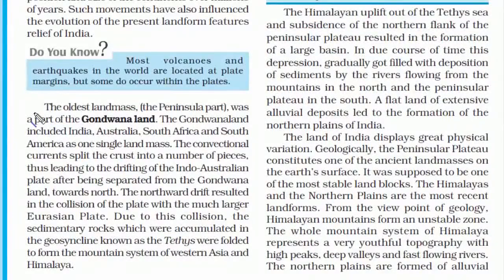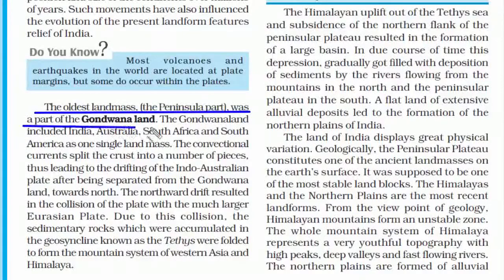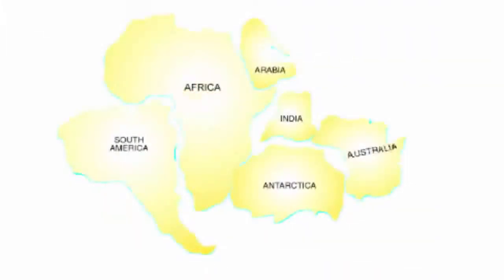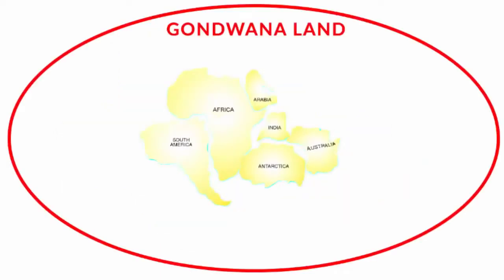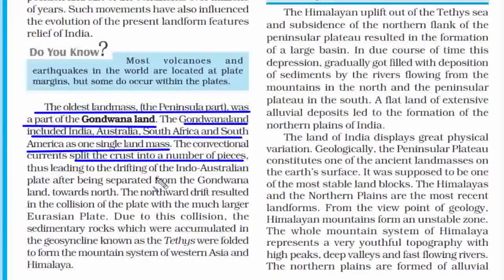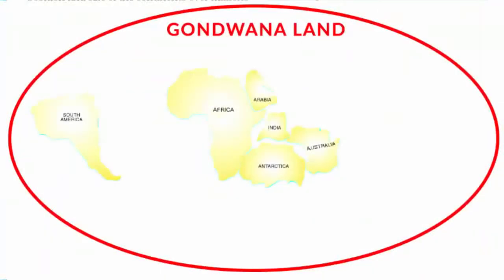India displays great physical variation. The peninsular plateau is one of the ancient landmasses on the earth's surface — it was a direct piece of Gondwana land. The peninsular region of India is the oldest landmass, and was part of the Gondwana land, which comprised several countries like South America, Africa, India, Antarctica, and Australia, all forming one single landmass. The crust then broke into a number of pieces and everything started drifting apart, with South America moving left, Antarctica going south, and India and Australia moving north and east.